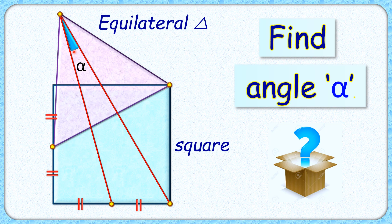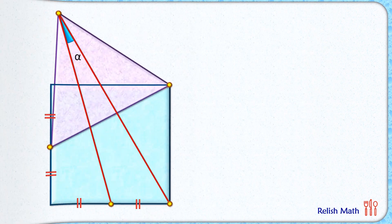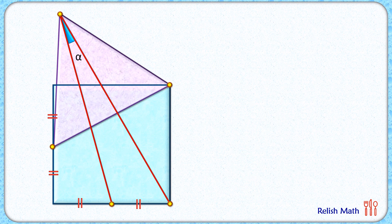This angle alpha is formed by joining the vertex of equilateral triangle to the midpoint of the sides and to the vertex of the square. The exciting part is with this given data we have to find the value of this angle alpha. Let's check this simple and elegant solution.